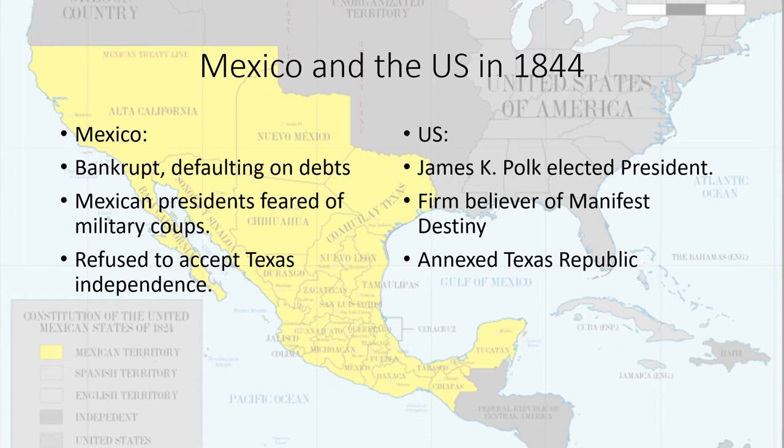In 1844, Mexico was a nation crippled by debt and bankruptcy and decided to stop paying their debt to American banks. Mexican presidents constantly feared being ousted by ambitious generals. The only thing Mexican politicians could agree on was that Texas was a rogue state, that they refused to accept its independence, rejected the treaties coerced from a captive Santa Ana in exchange for his life, and vowed to reconquer it once they were in a good position.